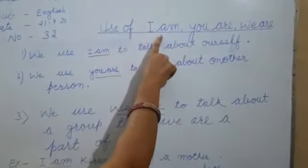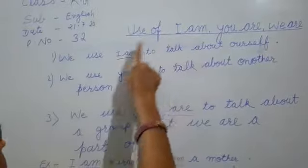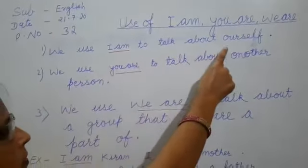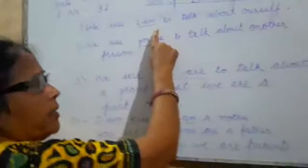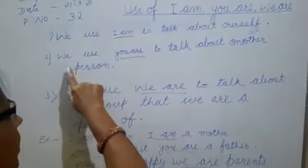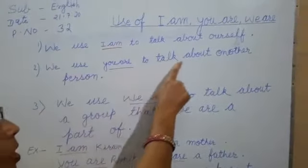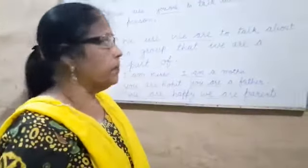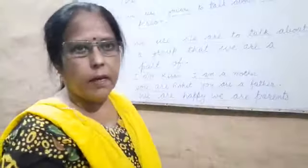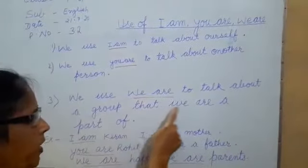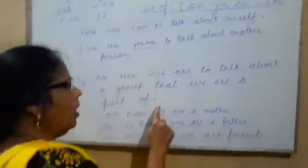So children, how do we use I am? We use I am to talk about ourselves. We use you are to talk about another person. We use we are to talk about a group that we are a part of.